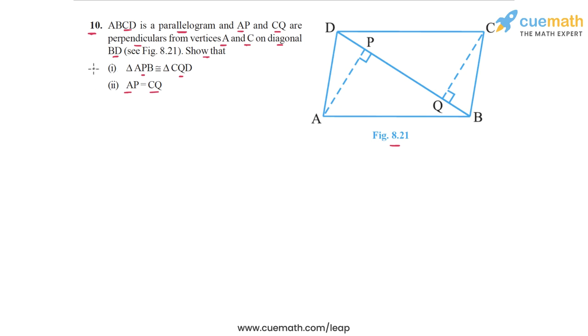So let's start with part one, where we have to show that triangle APB and triangle CQD are congruent.